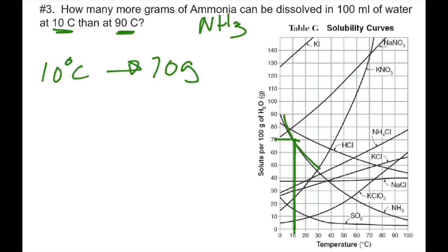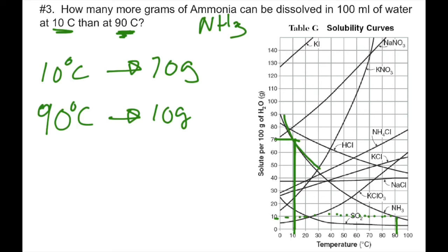Now at 90 degrees, we find 90 degrees on the x-axis, go up to the NH3 line, move across, and read 10 grams. So solubility is decreasing. We do a simple subtraction: 70 minus 10 equals 60 grams. So 60 more grams of ammonia can be dissolved at 10 degrees than at 90 degrees, demonstrating the effect of temperature on gas solubility.